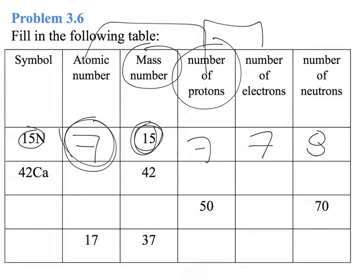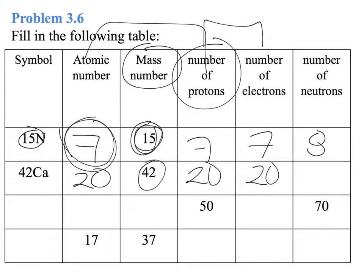For calcium, the atomic number is 20, therefore we have 20 protons and 20 electrons. The mass number here is 42, so we take 42 minus 20, which gives us 22 neutrons.